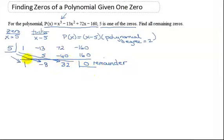So the polynomial of degree 2 is sitting right here. This is my x squared term, my x, and my constant. So I now know that P of x equals x minus 5 times my polynomial of degree 2, which is x squared minus 8x plus 32.